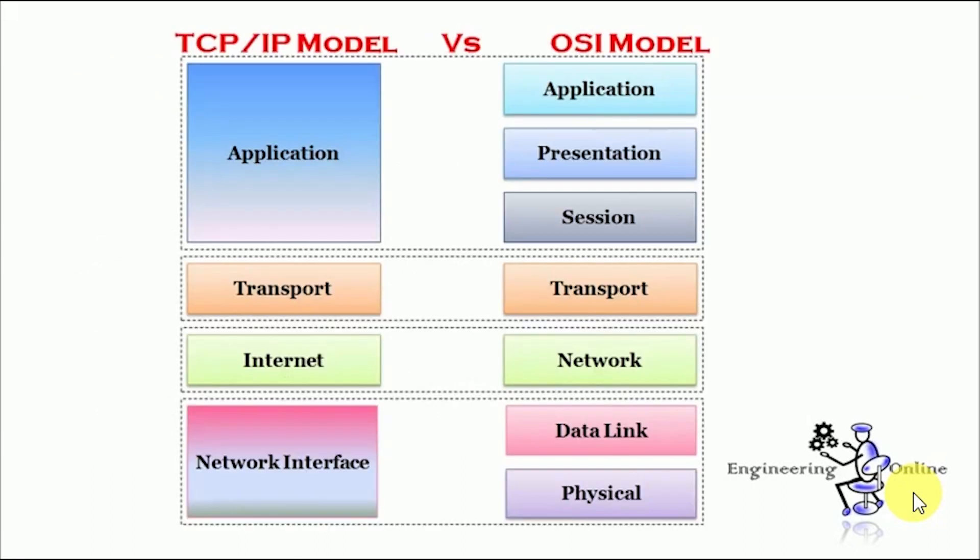Now, the following picture shows the comparison between TCP IP model and OSI model. As you can see from the picture, the TCP IP model has fewer layers as compared to OSI model. The application, presentation, and session layers has been merged into only application layer, whereas data link layer and physical layer has been merged into network interface layer.